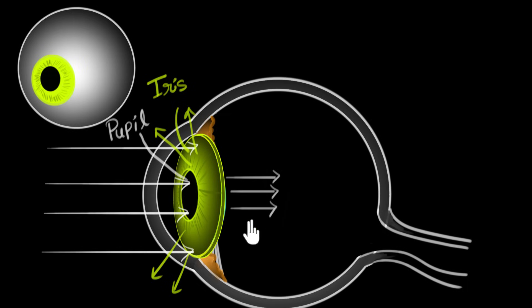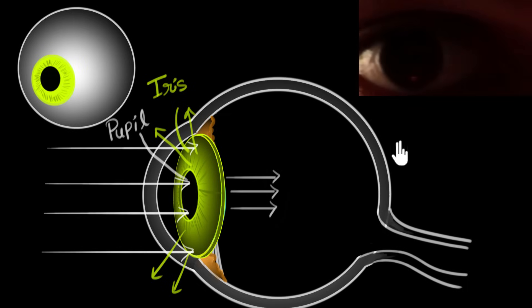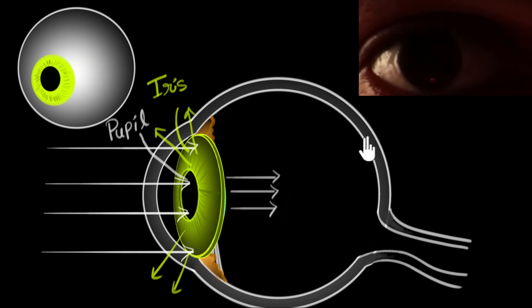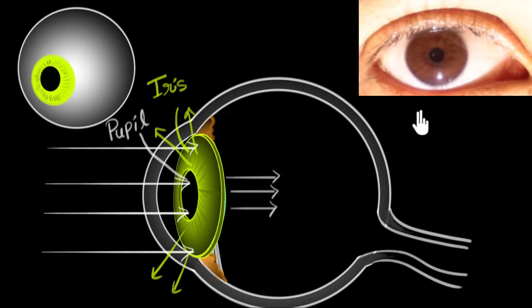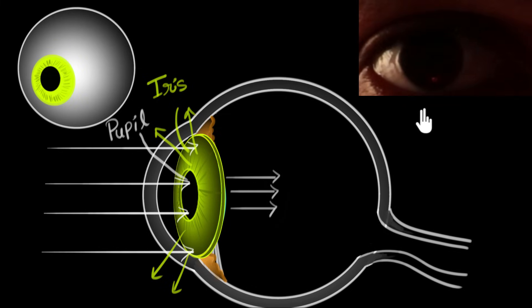And you can do this experiment at your home. Just stand in front of a mirror in a dark room. Your pupils will now be dilated. And just flash light into your eyes and you will see immediately that pupil will get constricted, become smaller in size.